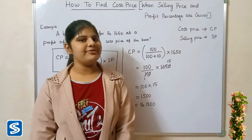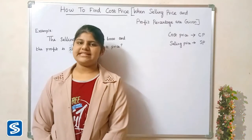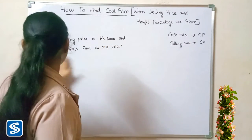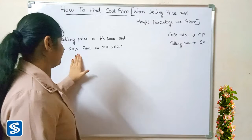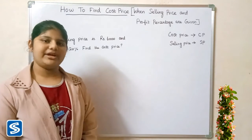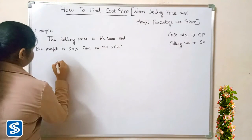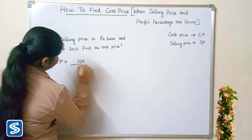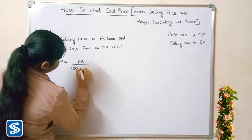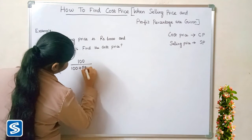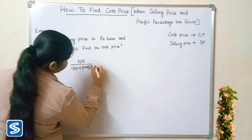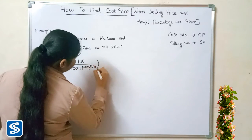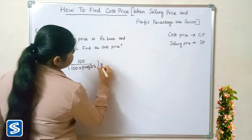Next we will take one more example. The sale price is rupees 6000 and the profit is 20 percent. Find the cost price. We already know that cost price is equal to 100 divided by (100 plus profit percentage), multiplied by selling price.